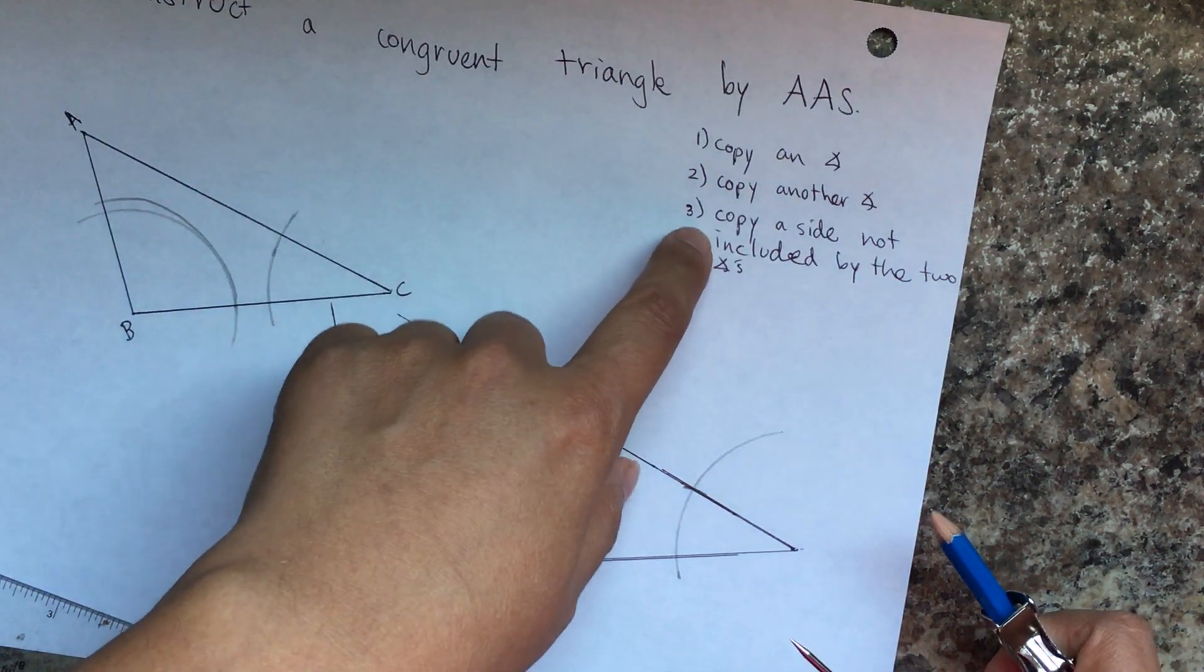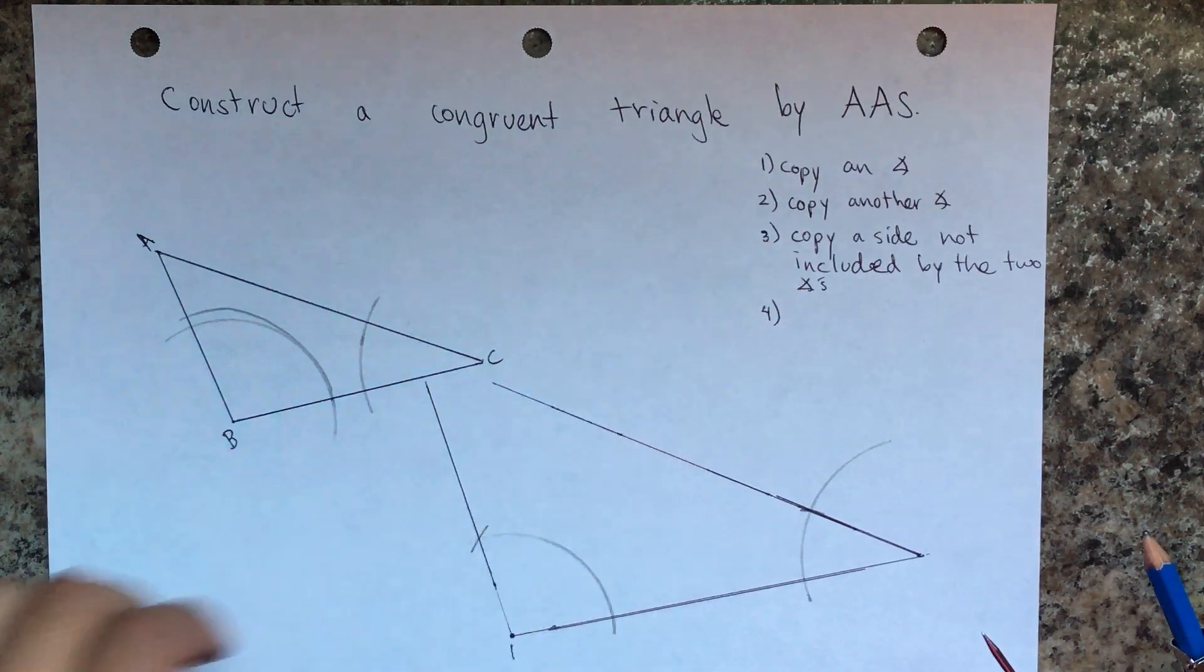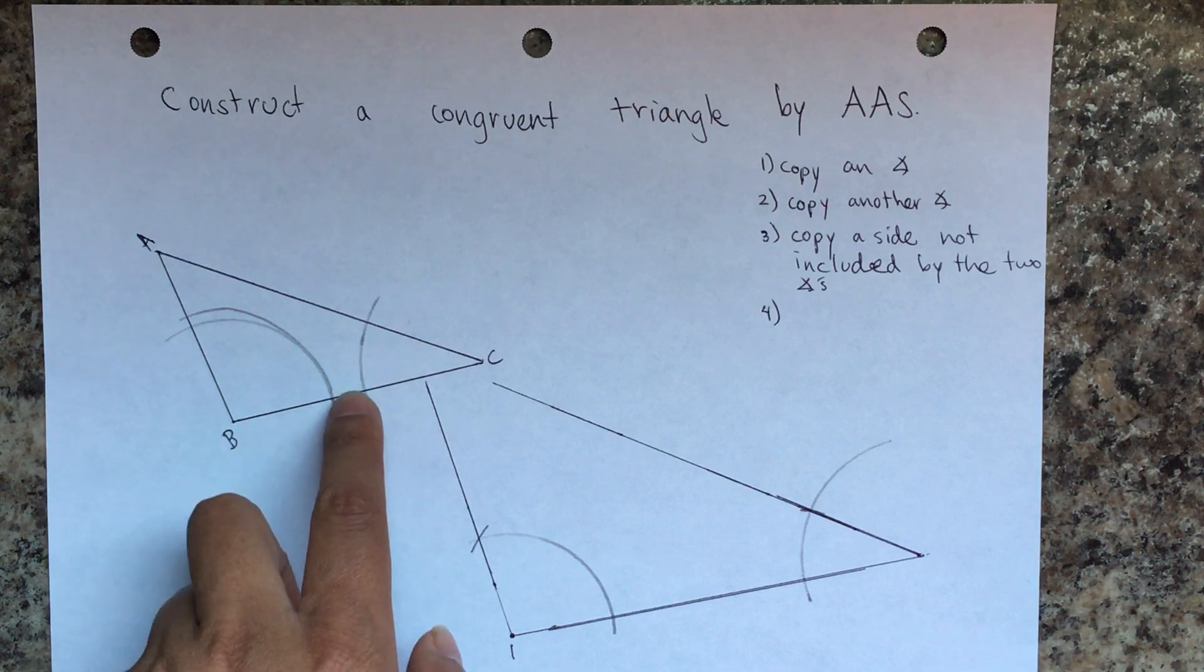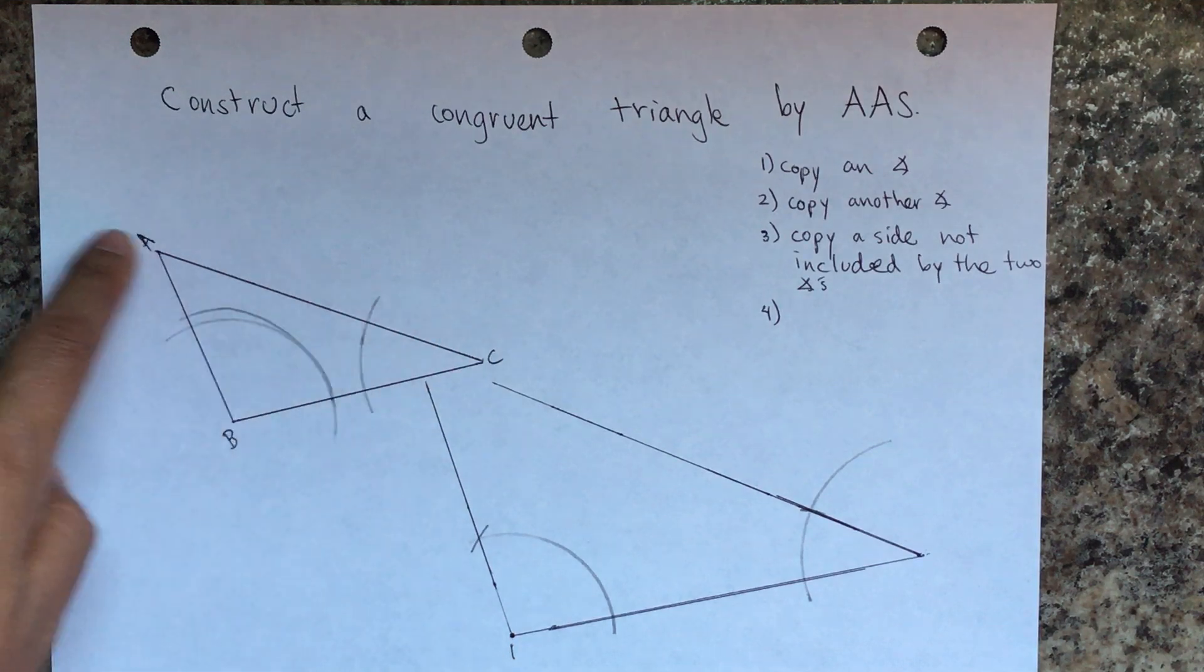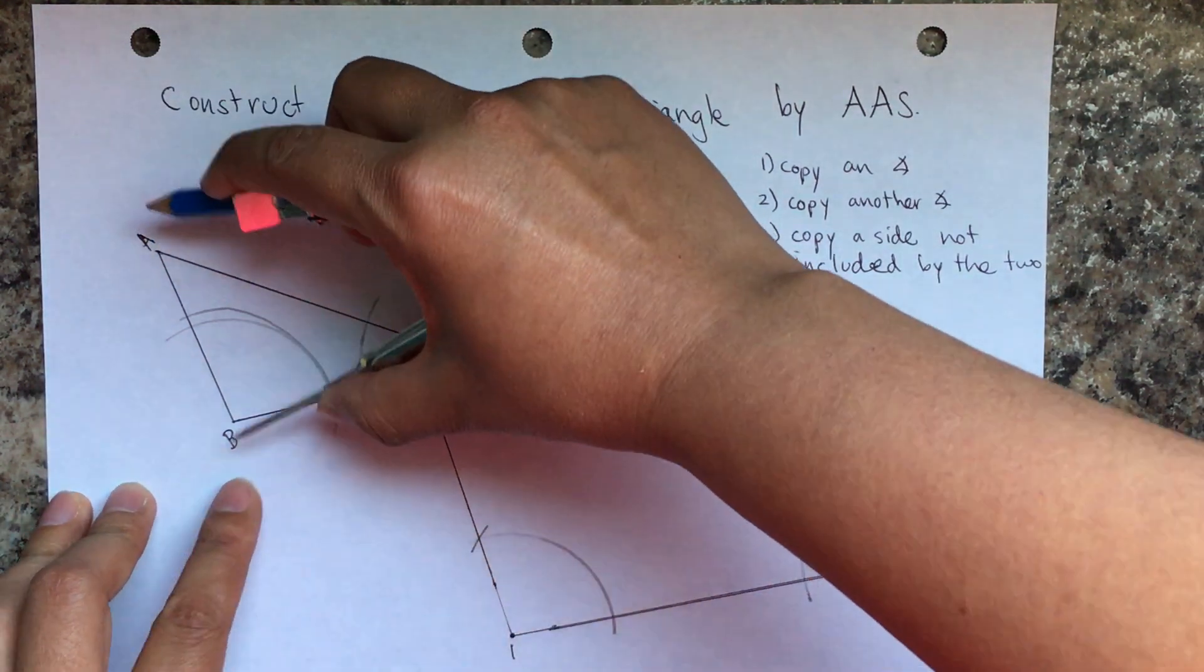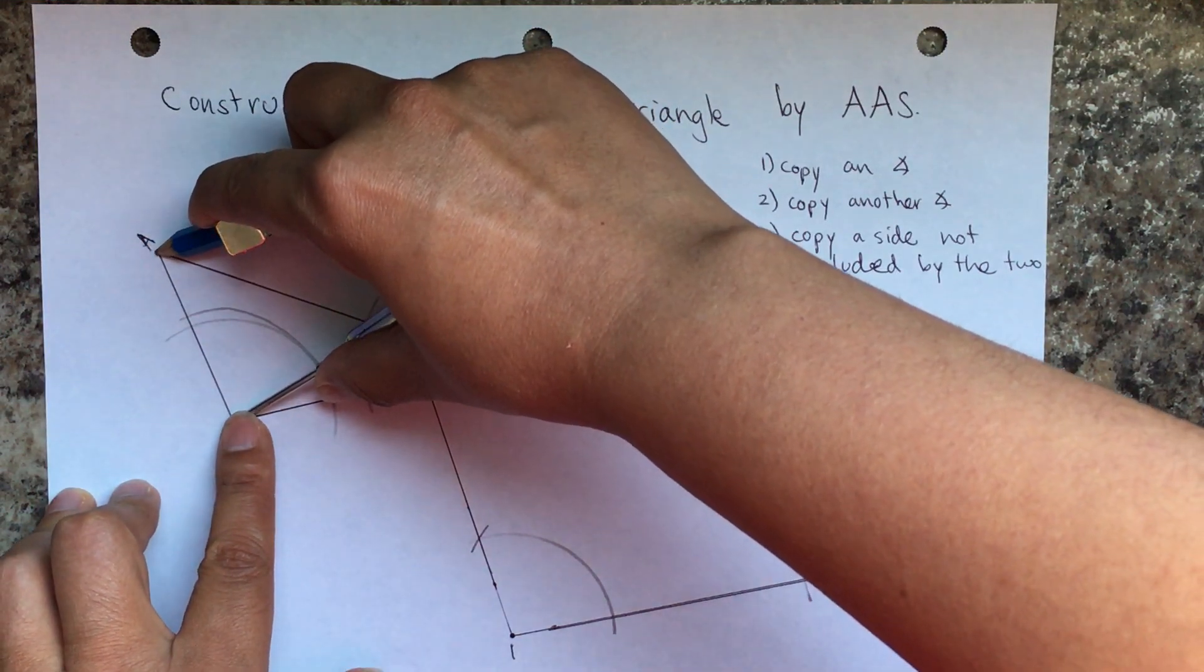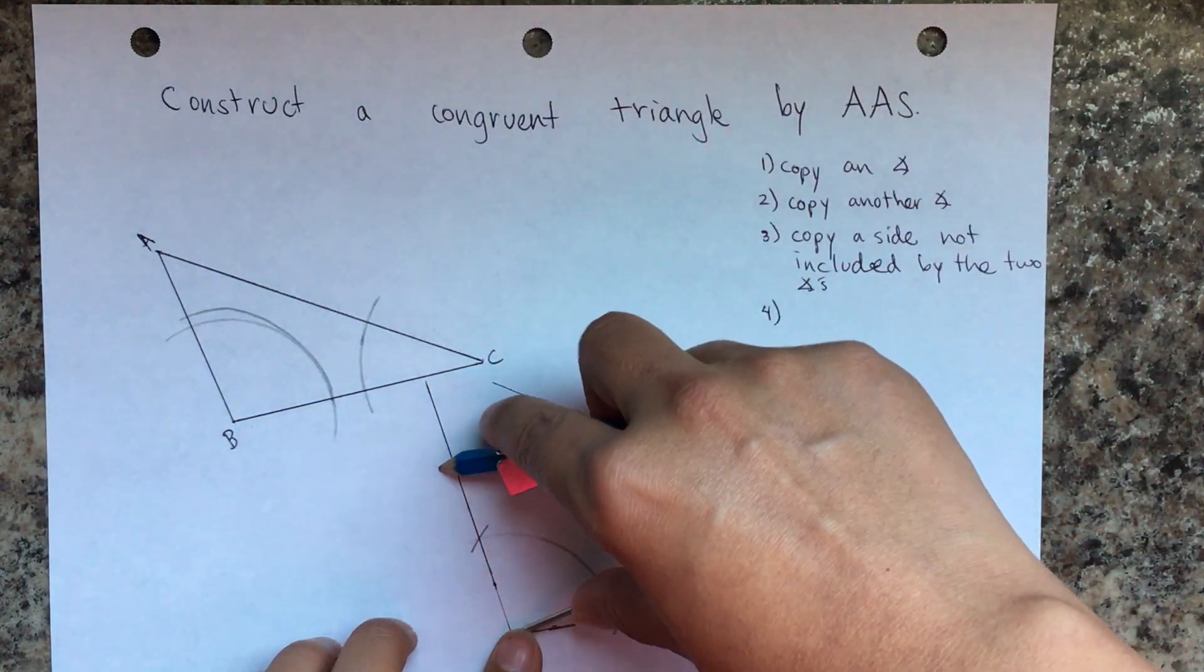Okay, and you can see that this triangle is a little bit bigger than this one, but again I'll show you in a minute. So then third step, it says copy a side not included by the two angles. So it can't be this side BC because that's included between angle B and angle C, so it's either AC or AB. And I think I'm going to go with AB, and so I'm going to measure side AB.